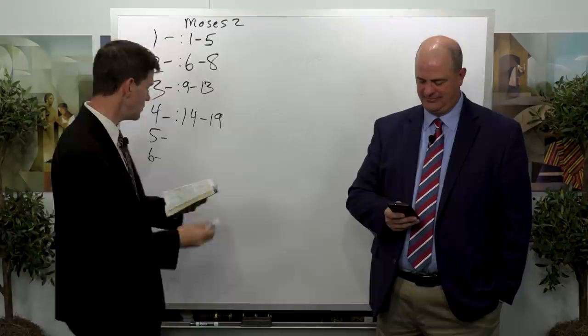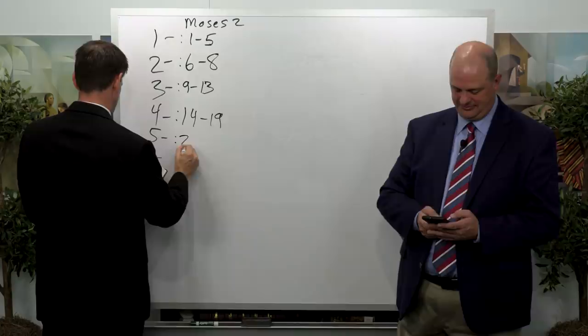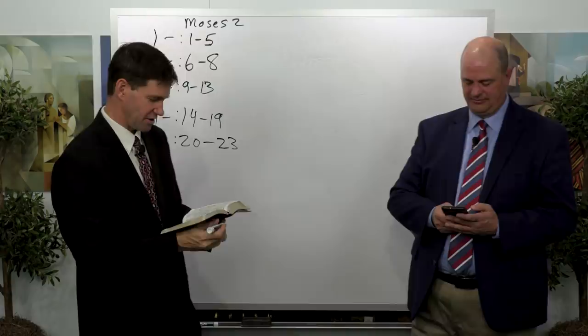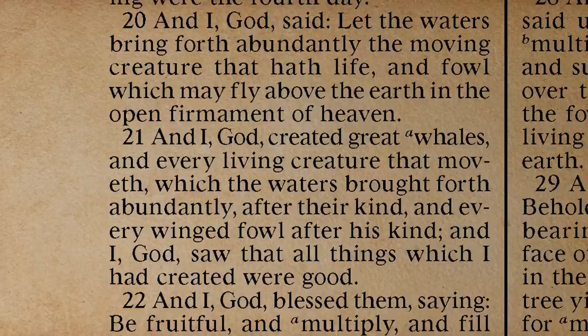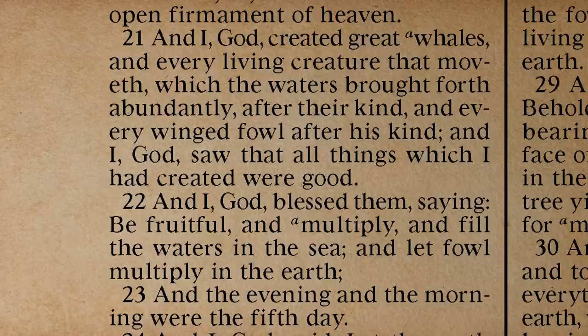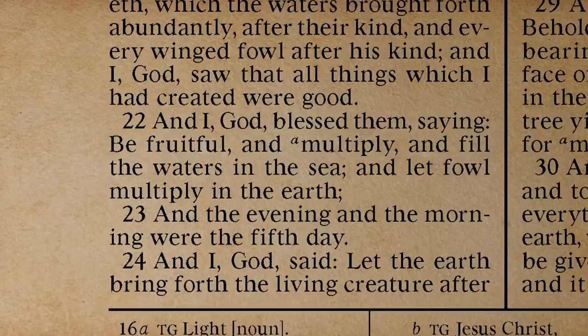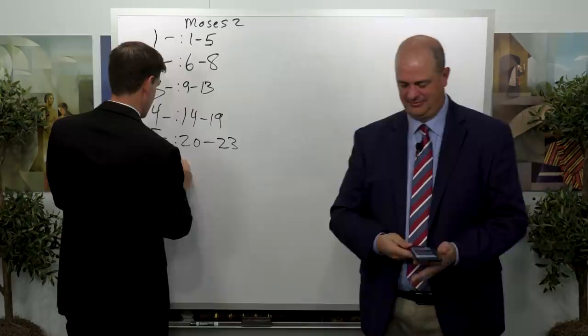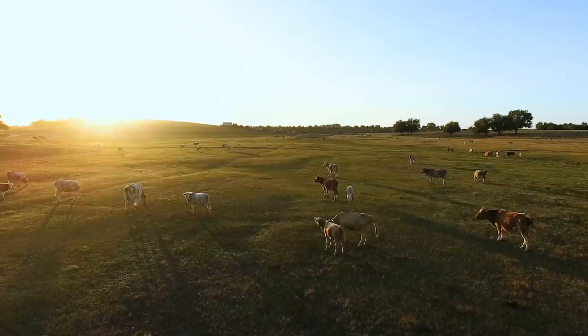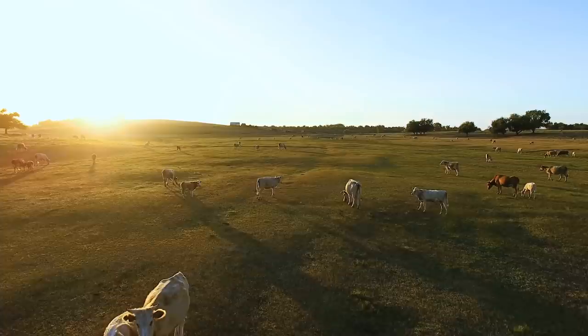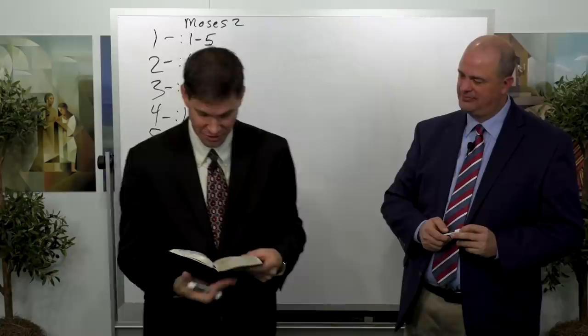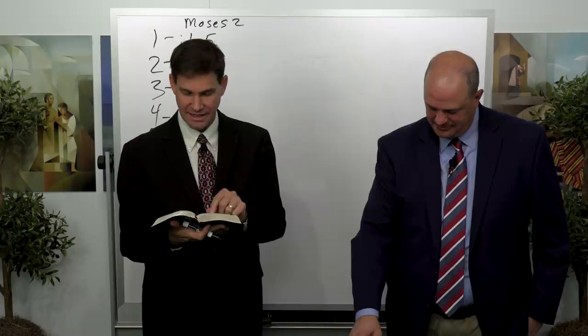Day five, verses 20 through 23: he's creating beginning with the animals in the waters — the whales — and then the winged fowl after his kind. All these animals are blessed in verse 22 to be fruitful and multiply, fill the waters in the sea, and let the fowl multiply in the earth — and the evening and the morning were the fifth day. Then at the beginning of the sixth day, verses 24 through 31, he creates the cattle and the beasts upon the face of the land. After all those bigger animals, God saw that all these things were good.